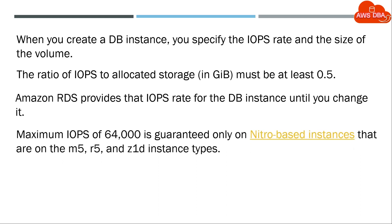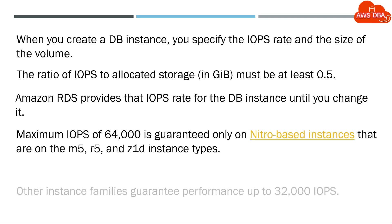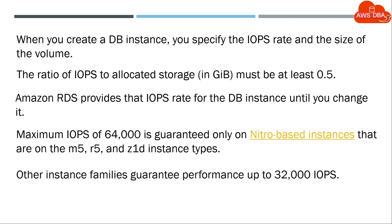Maximum IOPS of 64,000 is guaranteed only on nitro-based instances that are on the M5, R5, and Z1D instance types. Other instance families guarantee performance up to 32,000 IOPS.